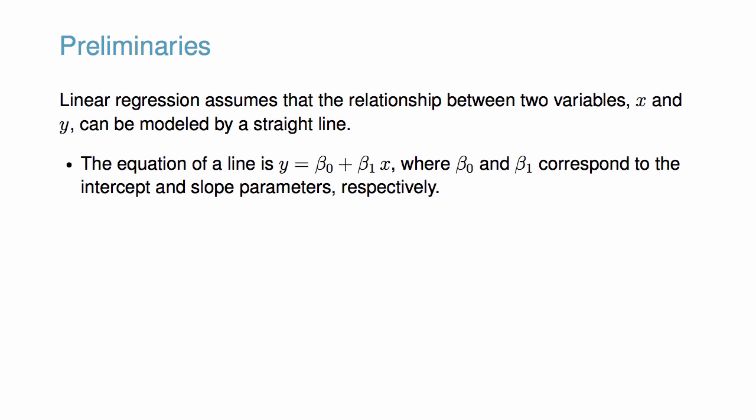In the setting of a perfect linear relationship, we simply need the familiar equation for a line: y equals beta 0 plus beta 1 times x, where beta 0 and beta 1 correspond to the intercept and slope parameters respectively.